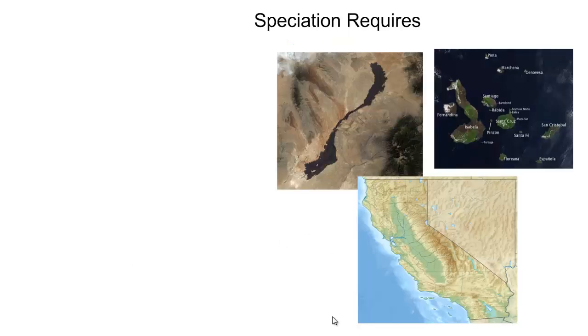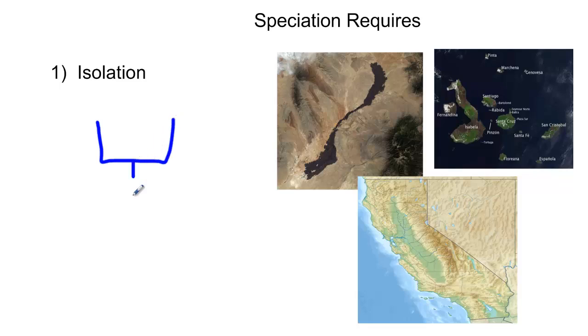So, what does speciation require? Well, the first thing that speciation requires is isolation. In order for an organism to split and create two new species, and we've seen that pattern before, this branching pattern, in order for this split right here to occur, first you need isolation.